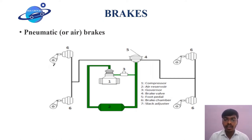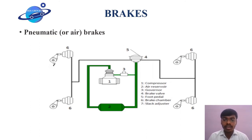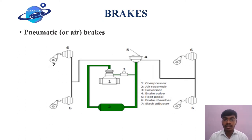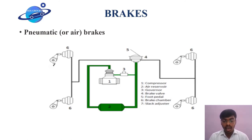The brake valve, foot pedal, and brake chamber can be understood by their names. Regarding the slack adjuster: in earlier days a manual slack adjuster was used, but now automatic slack adjusters are used. An automatic slack adjuster is designed to compensate for brake lining and drum wear, and we have to maintain a constant actuator stroke.